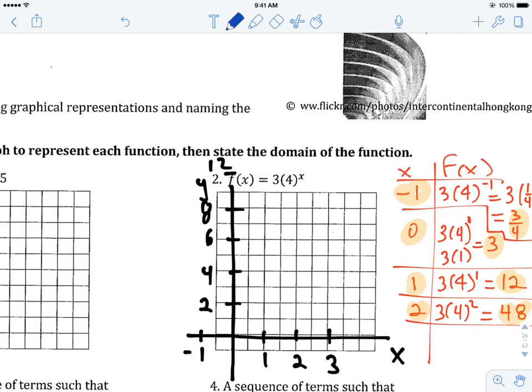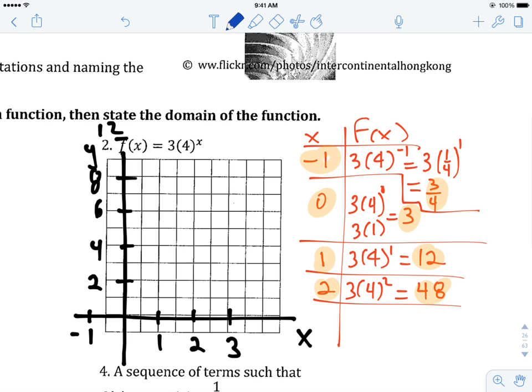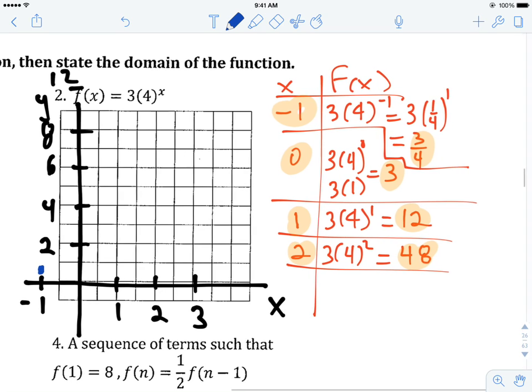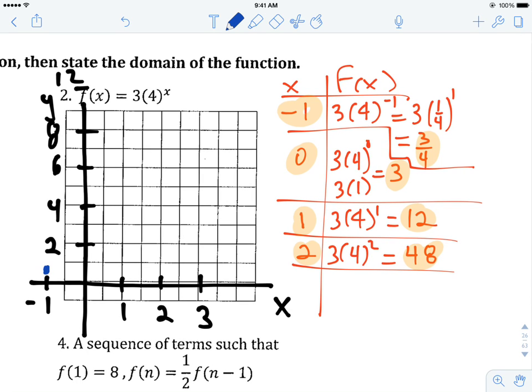Now, let's start plotting some points. When my x value is negative 1, the y value is 3 fourths, so 3 fourths should be about right here somewhere. And when my x value is 0, the y value is 3, so 0, 3 would be here. And when my x value is 1, the y value is 12, which is way up here.